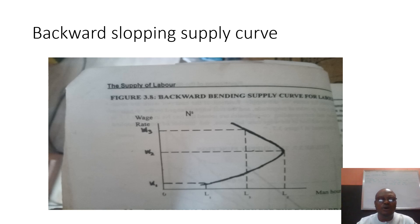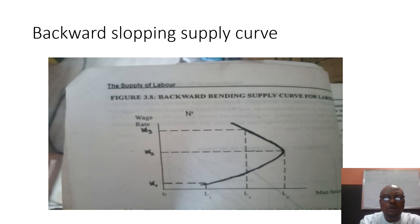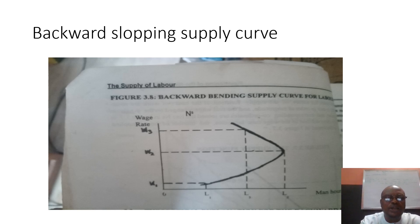However, at some point in time an individual may value leisure more than income, and at that point we may experience a backward-sloping supply curve. At wage rate W1 the individual supplies L1 hours of work. When the wage rate increases to W2, they also supply L2 hours of work — more hours were supplied as a result of the increase in wage rate.